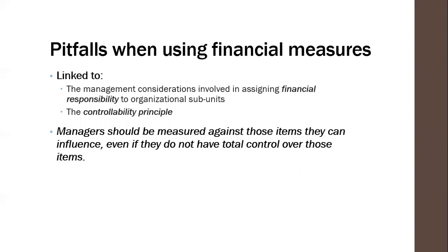Although financials are related to the performance of each department, not all items are controllable, so purely financial measures may hinder motivation. Managers should be measured against items they can influence even if they do not have total control. Not all managers at different levels will have full control over the financials, but they should have a reasonable ability to influence them. If they're able to influence it, even though they cannot control it fully, it still falls within the motivational aspects of financial measures.